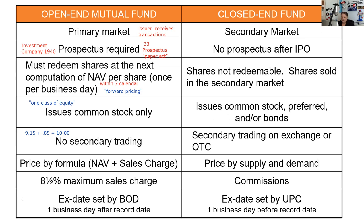Another major difference in an open-end fund is that the ex-date is set by the Board of Directors. The whole function of the ex-date being one business day prior to the record date is a function of the Uniform Practice Code, which standardizes secondary trading in the securities industry — but this is not secondary trading. So the declared date, record date, and ex-date are all set by the Board of Directors of an open-end fund. The testable distinction is that the ex-date is one day after the record date, because there is no secondary trading.